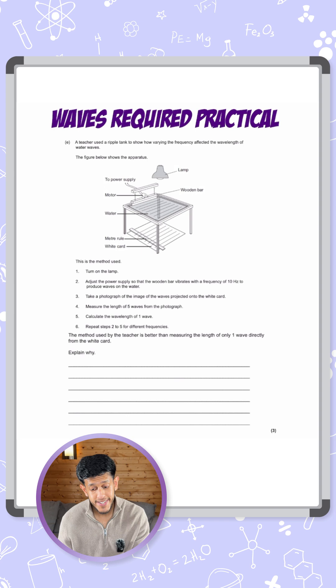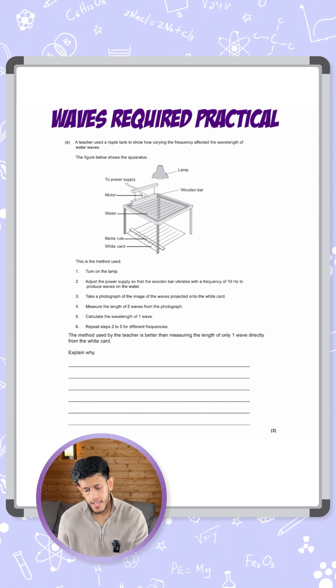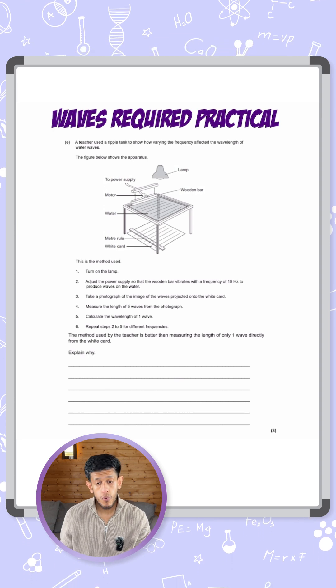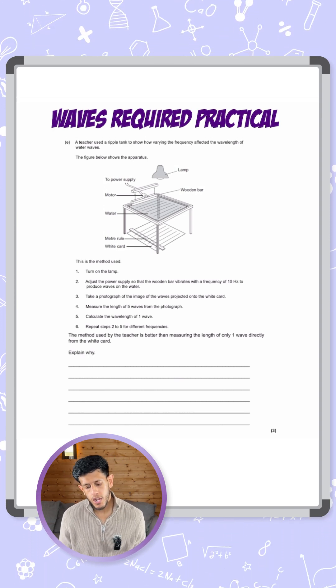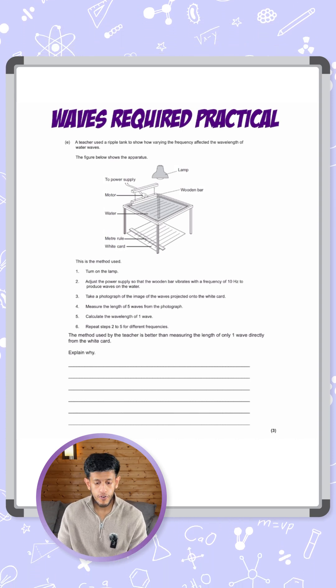The figure below shows the apparatus. You can see a lamp shining on top of a wooden bar and a ripple tank, and the water is going to cause the waves to ripple. Then the light shines below onto the screen where you can see the white card and a meter rule measuring the length of the wavefronts.